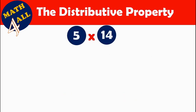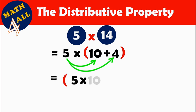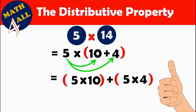So 5 by 14 equals 5 times 10 plus 4. Now we have to multiply 5 by 10 first, then 5 by 4, to get 5 by 14. That gives us 5 by 10 plus 5 by 4. Can you multiply 5 by 10? It's so easy — it will be 50. And 5 by 4 is also easy — it will be 20.